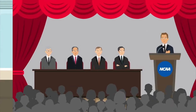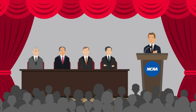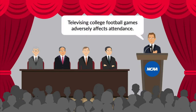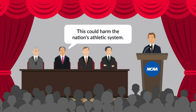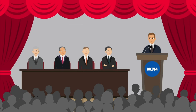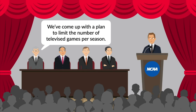In 1951, the committee delivered a report at the NCAA's annual convention, concluding that televising college football games adversely affected college football attendance and, unless brought under some control, threatened to harm the nation's athletic system. Consequently, the NCAA developed a plan that limited the number of college football games televised per season.